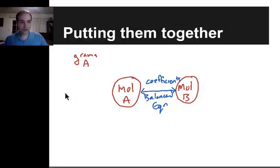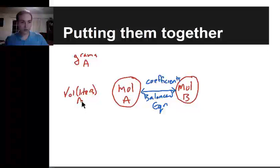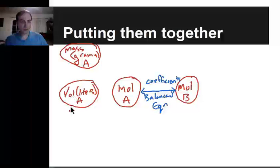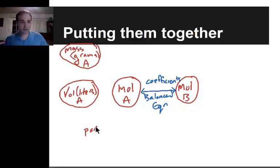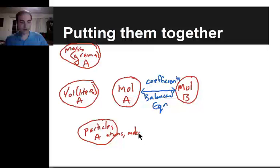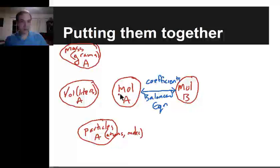I can also go from moles of A to the volume, or liters of A. And then finally I could go to particles of A — things like atoms, molecules, etc. So these are three things that I could take the moles of A and convert them into.